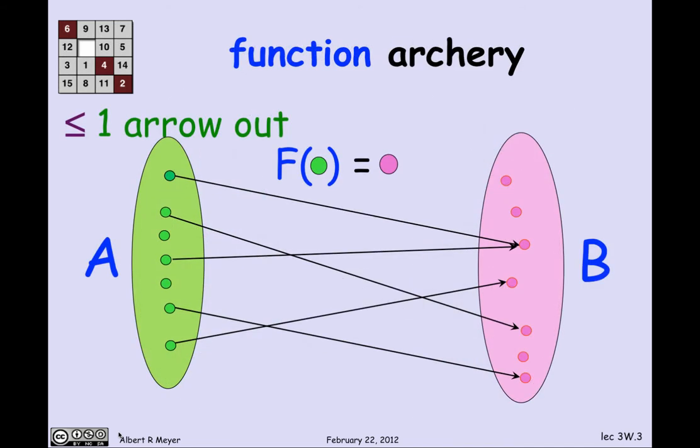We already observed one aspect of archery and arrows, that the concept of a function could be captured by saying that there was less than or equal to one arrow out of every element in the domain. That implied that there was a unique other end of an arrow out of a domain point called the value of that point under the relation, which is in fact a function f. So f of green equals magenta where there is an arrow out of a green element.